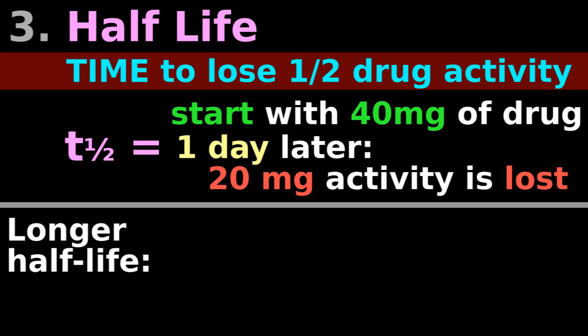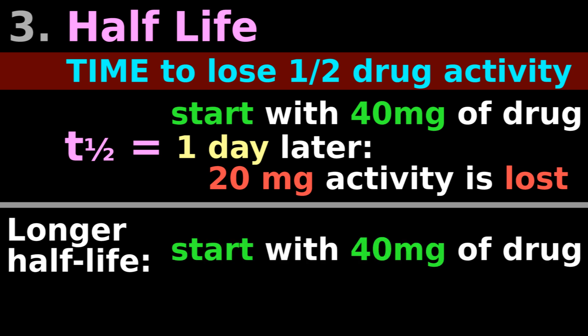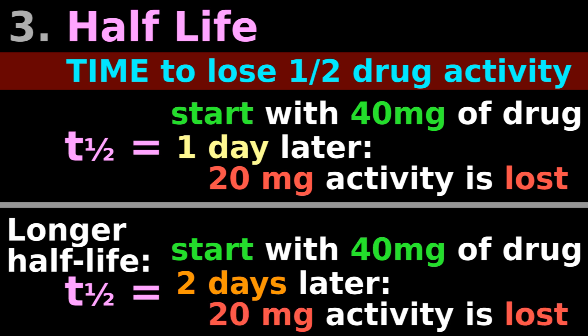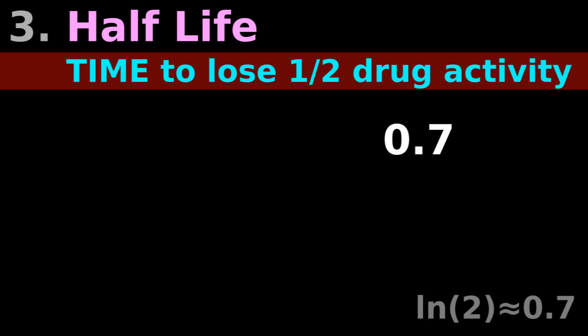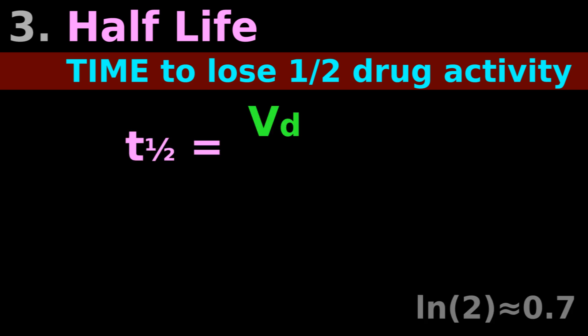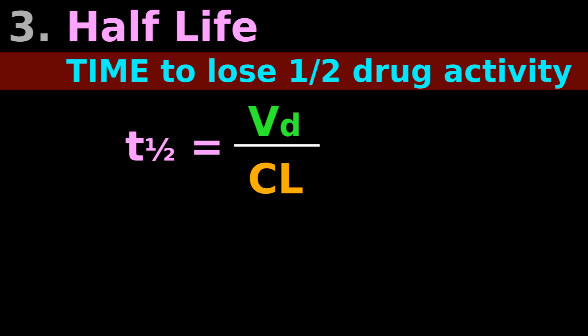A longer half-life obviously means it takes longer to lose half a drug's activity. You start with 40 mg of drug in plasma and it takes 2 days to lose 20 mg of drug activity. The calculation is VD divided by clearance, with a magic 0.7 correction factor, so the real equation is: half-life = (VD / clearance) × 0.7.